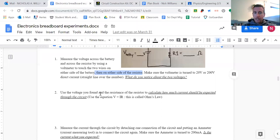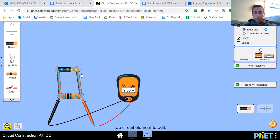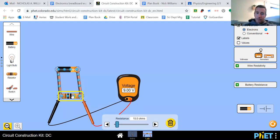Now use the voltage you found and the resistance of the resistor to calculate how much current should be expected through the circuit. Alright, so for mine, the voltage I found was 9 volts. To find the resistance of the resistor, I can click on it and it says resistance 10.0 ohms.